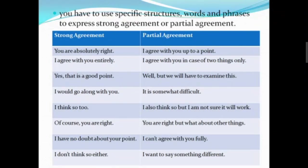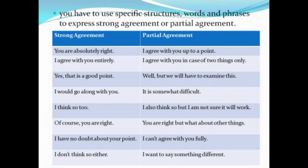These expressions show that you strongly agree with the point of view of others. But sometimes you partially agree with another's point of view. That time you can express your partial agreement like this: 'I agree with you up to a point.' 'I agree with you in case of two things only.' 'Well, but we will have to examine this.' 'It is somewhat difficult.' 'I also think so, but I am not sure it will work.' 'You are right, but what about the other things?' 'I can't agree with you fully.' 'I want to say something different.'